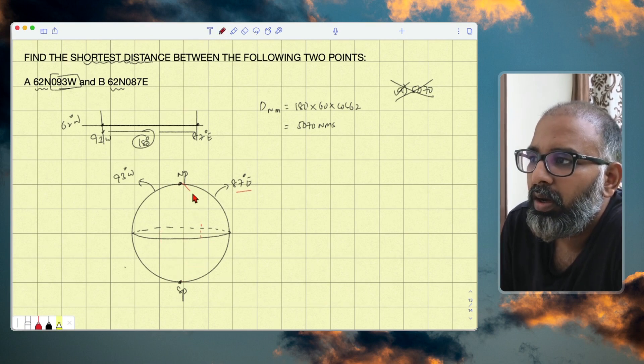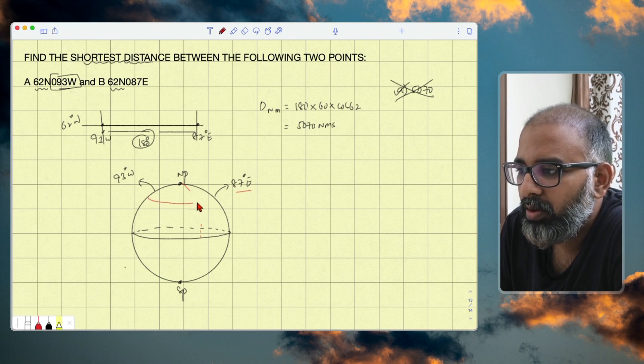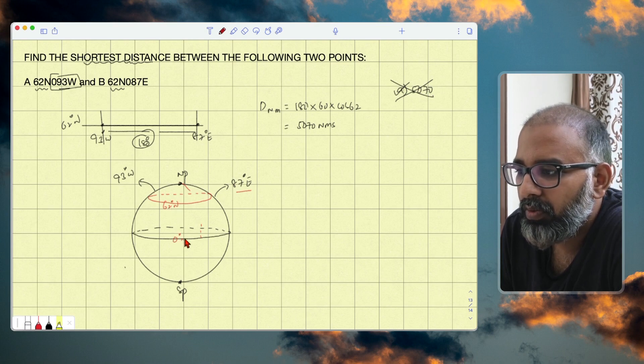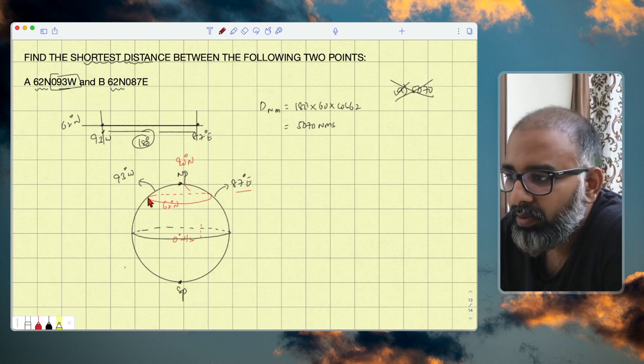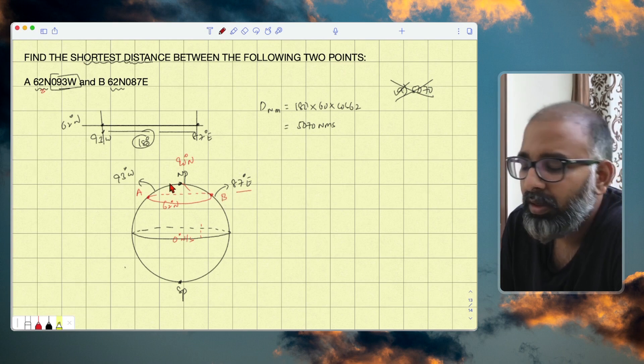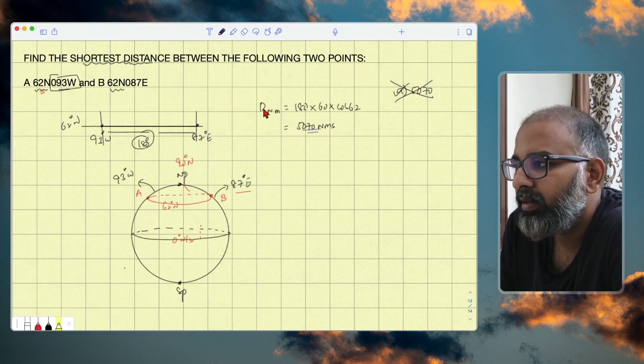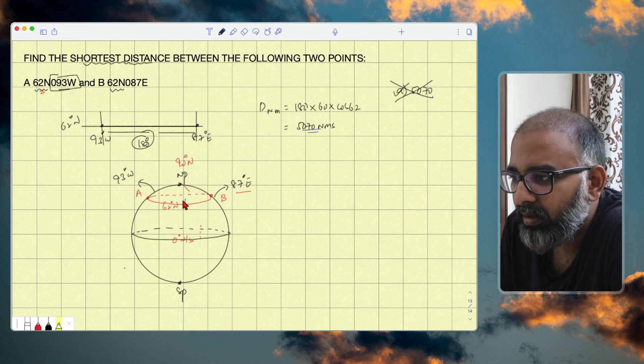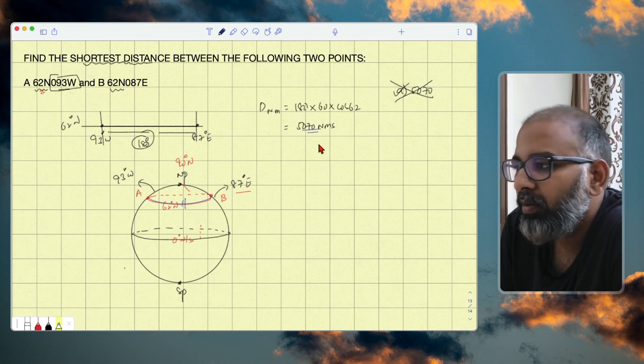Now on this, if I mark this longitude's latitude as 62 degrees north - equator is 0 degrees, north pole is 90 degrees north - so this is 62 degrees north. On this 62 degrees north, this point is 93 degrees west, and this is your A, and this is your B. Now if you're calculating like this, you're calculating that you're flying from A to B like this along a parallel of latitude.